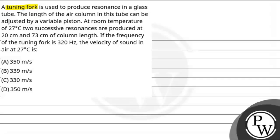a tuning fork is used to produce resonance in a glass tube. The length of the air column in this tube can be adjusted by a variable piston. At room temperature of 27 degrees Celsius, two successive resonances are produced at 20 cm and 73 cm of column length. If the frequency of the tuning fork is 320 Hz, the velocity of the sound in air at 27 degrees Celsius is.